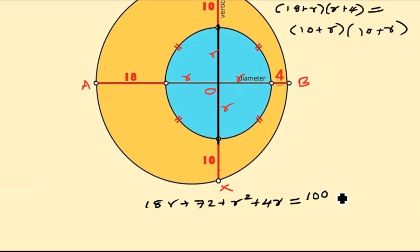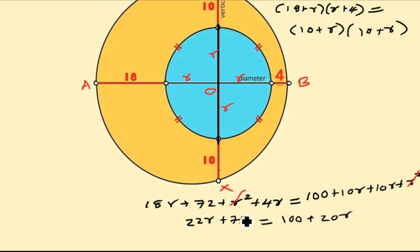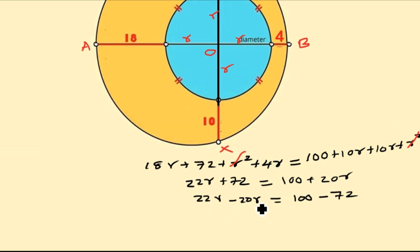Continuing the right side: 10r plus 10r gives 20r, plus r squared. The r squared terms cancel from both sides. On the left we have 18r plus 4r equals 22r plus 72. Collecting like terms: 22r minus 20r equals 100 minus 72, so 2r equals 28.